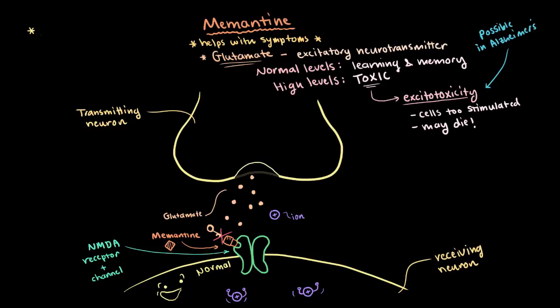Now memantine is used most often to treat moderate to severe Alzheimer's disease, and will often be taken alongside cholinesterase inhibitors. Some side effects can be things like headache, confusion, and dizziness.